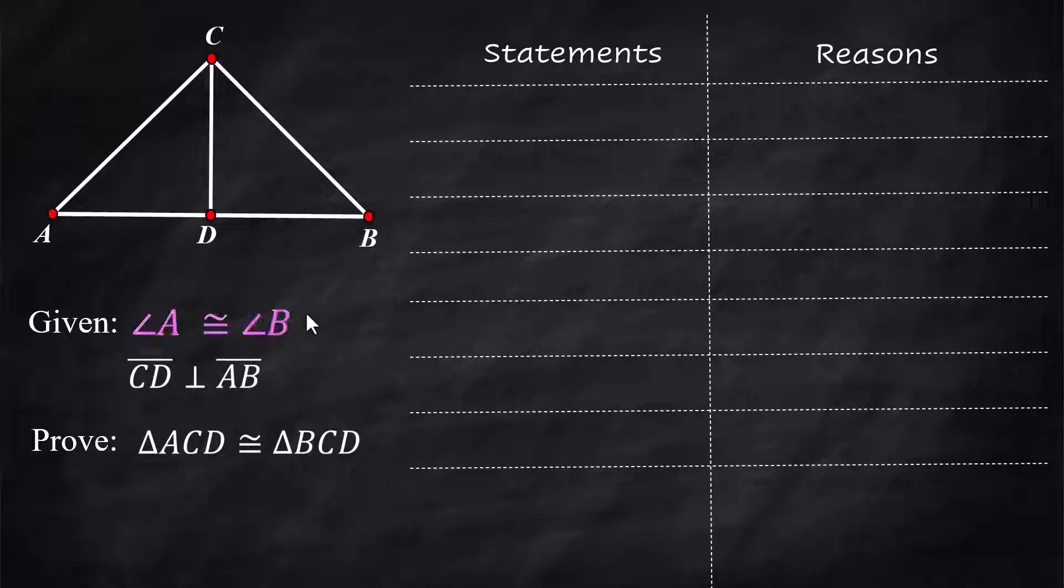Our given information is that angle A is congruent to angle B, and that segment CD is perpendicular to segment AB. It's going to form two 90-degree angles right there around point D. We do know we're sharing a side.